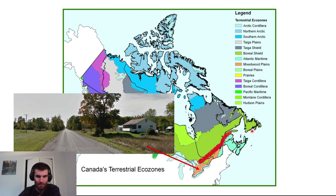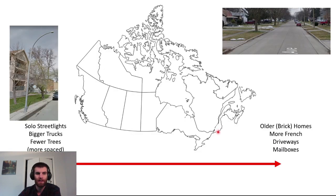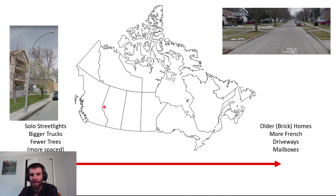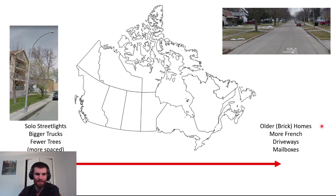Architecture is a good general clue when you're in a town or city. In general, Europeans settled Canada from east to west, so homes in the east tend to be older and there are a lot more brick homes, especially in Ontario and Quebec. Out west, you get more wood-framed homes. You tend to see large brick homes in Ontario and different sidings out west — you'll see occasional brick homes out west, but a lot less. The trees also tend to be much more densely packed out east.